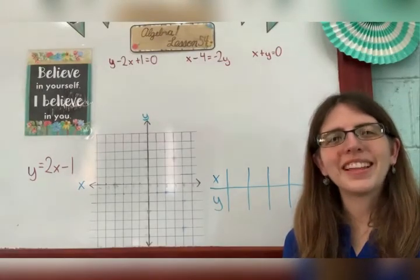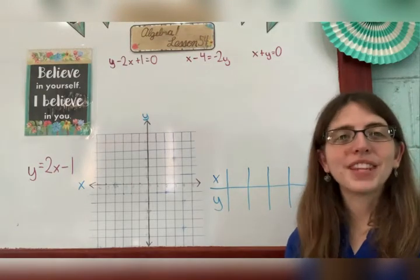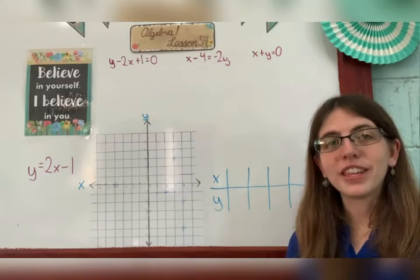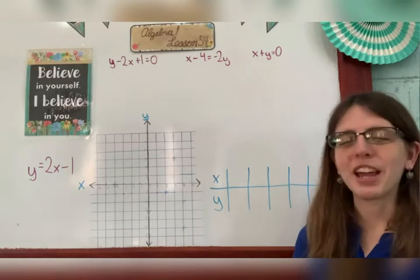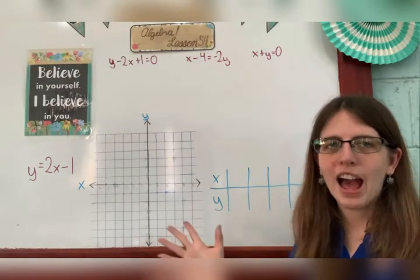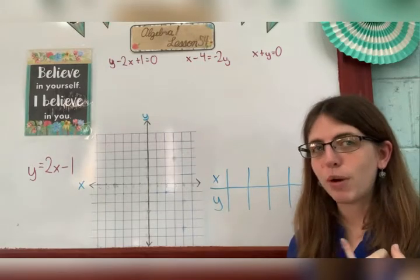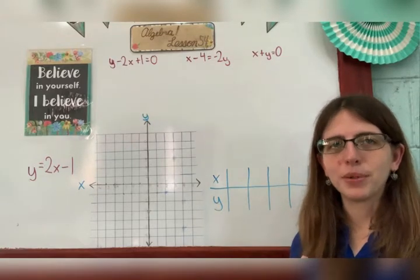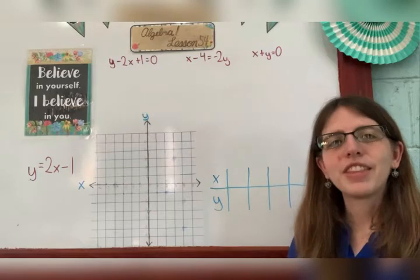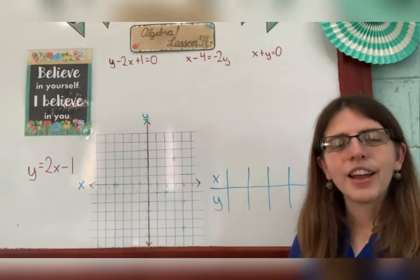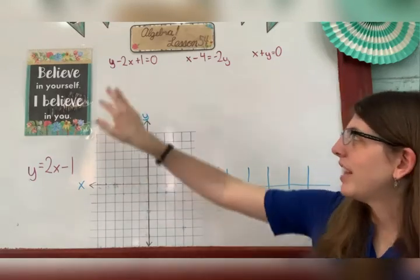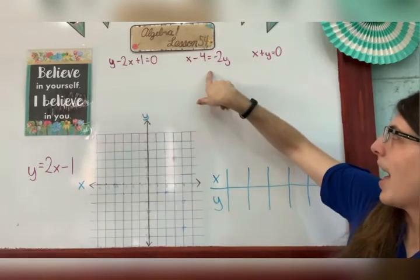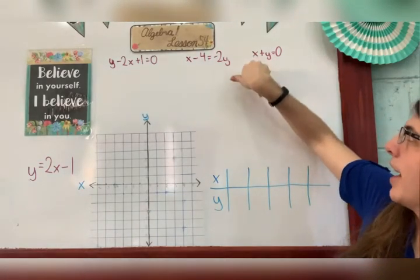Hi guys, welcome to Algebra 1, lesson 54. We're talking about the graph of linear equations. We learned about a graph in yesterday's lesson, and now we're talking about graphing the equations themselves. This equation that we graph is always a first degree equation, so the highest exponent is 1, and it only has two variables. When we graph an equation like this, the points are always in a line, so we call it a linear equation. These three equations are all examples: y minus 2x plus 1 equals 0, x minus 4 equals negative 2y, and x plus y equals 0.